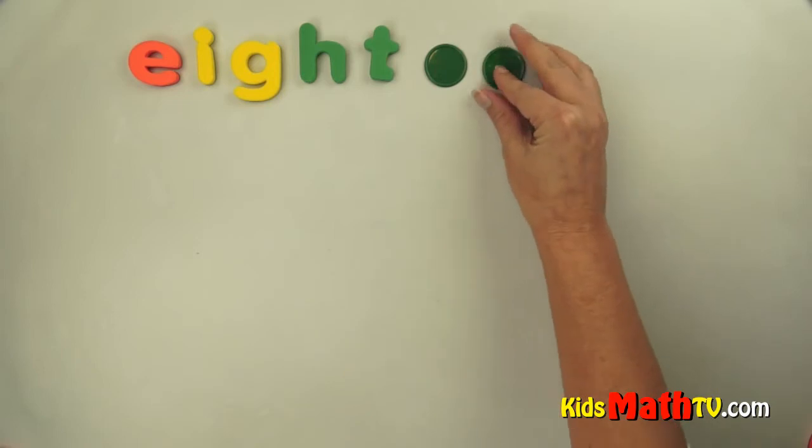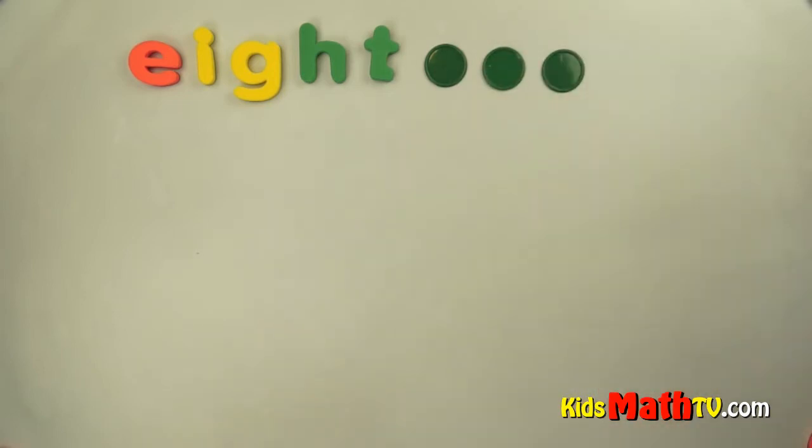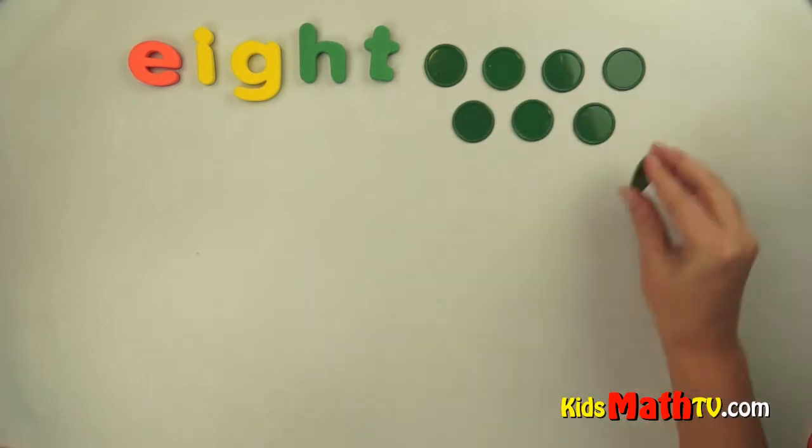Here's one, two, three, four, five, six, seven, eight. Eight green circles.